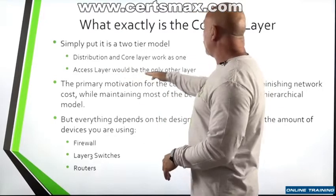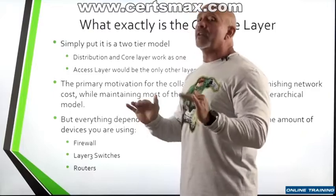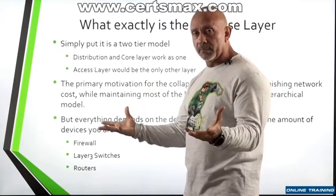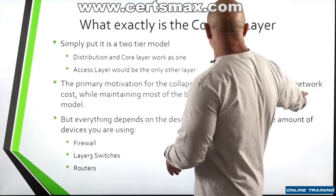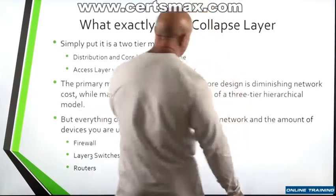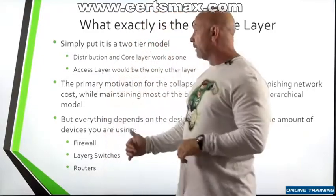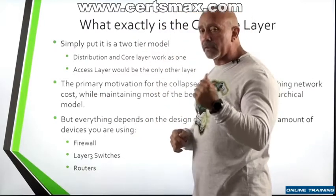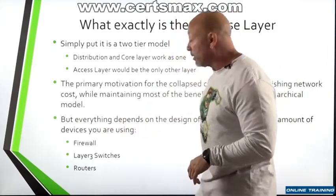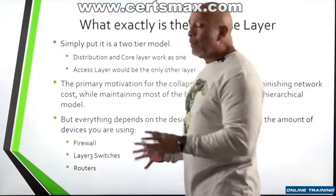Your access layer would be the only other layer — keep that in mind as you go through this. This is their design, their golden grail. The primary motivation for the collapse core design is diminishing network cost while maintaining most of the benefits of a three-tier hierarchical model. They're trying to diminish the cost by putting that into two layers, but everything depends on the design of your network and the number of devices you're using — firewalls, layer three switches, routers, and all those different things.